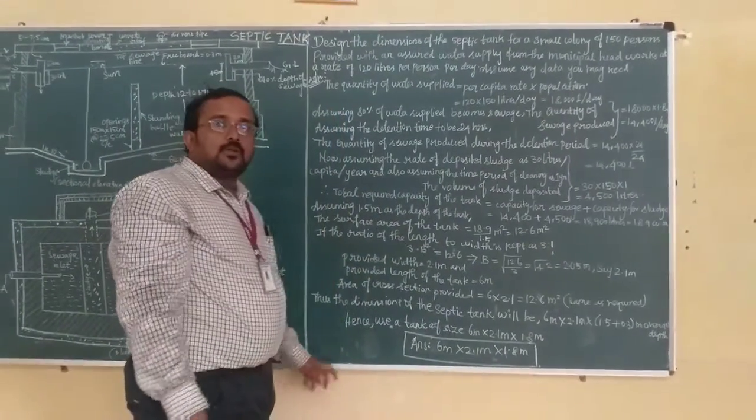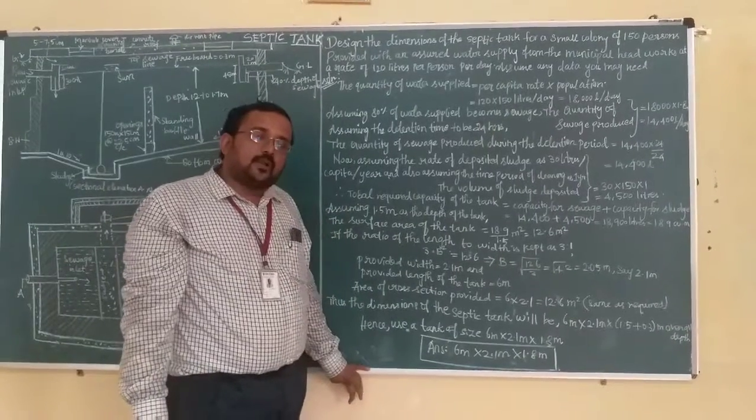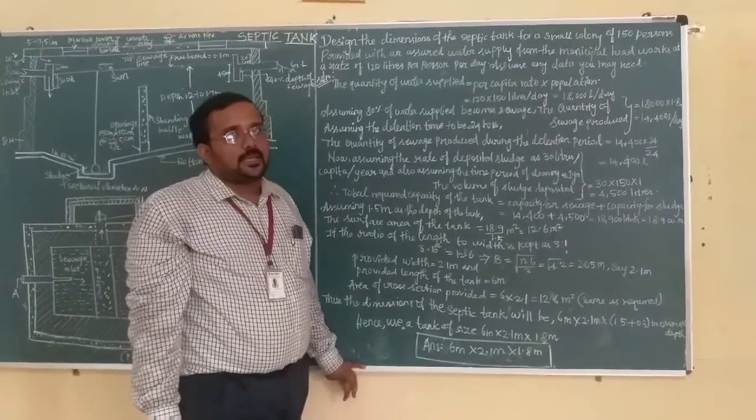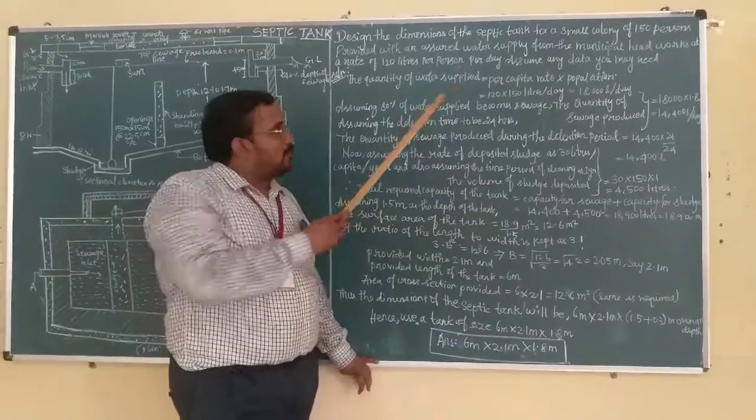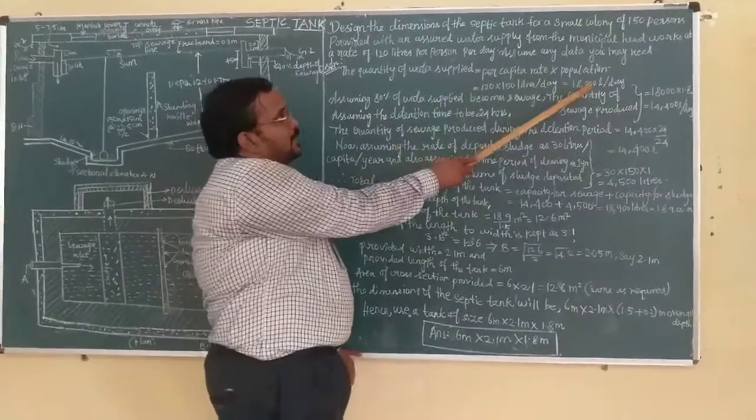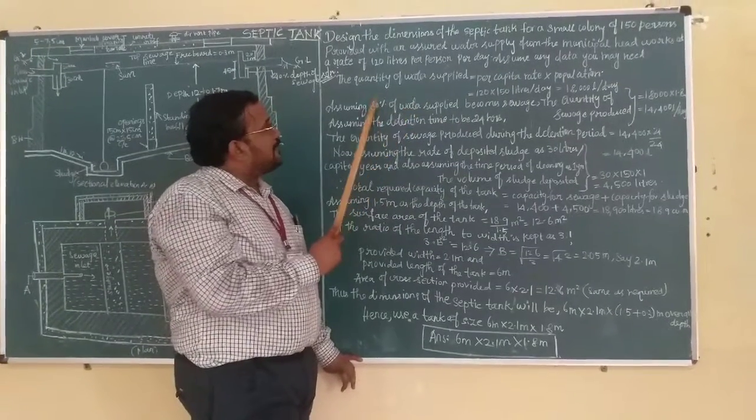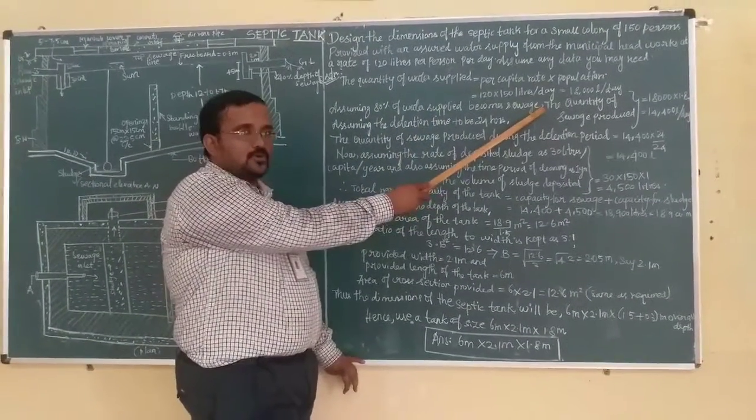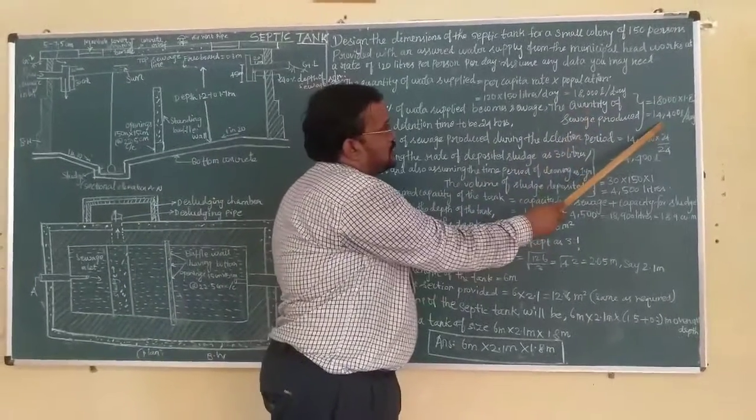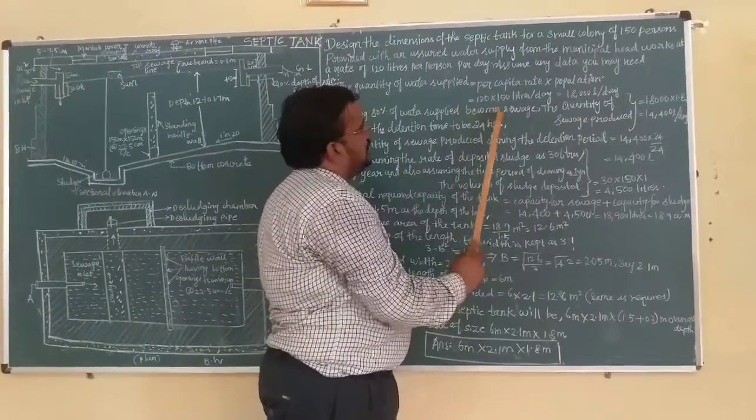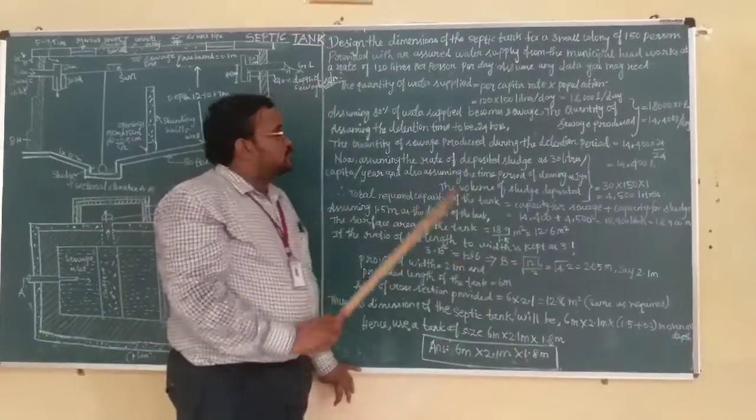Now we have to understand that the water supply is consumed by human beings for so many activities: drinking, washing, bathing. Only water supply, 18,000 liters per day, is not all contributed to sewage. We assume 80% of the water supply becomes sewage. So the amount of sewage: water supply is 18,000, 80% will be 14,400 liters per day.